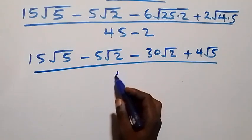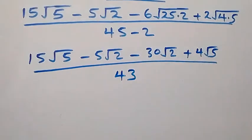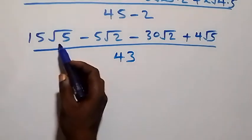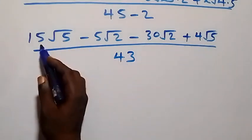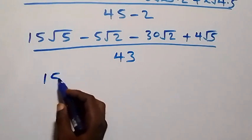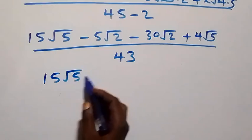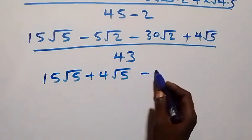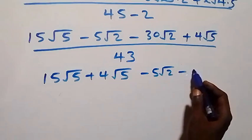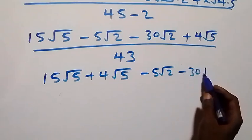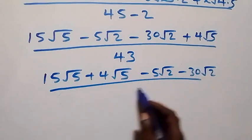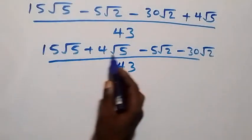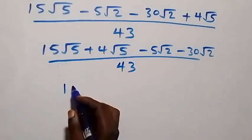The denominator is 43. Bringing similar terms together: root five terms are 15 root five plus 4 root five; root two terms are minus five root two minus 30 root two, all over 43. This gives us 19 root five minus 35 root two over 43.